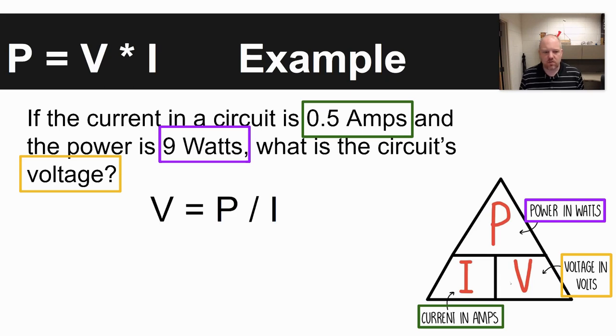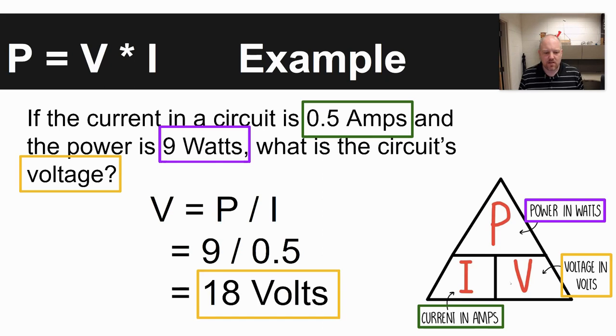The equation we want to use if we're solving for voltage is P divided by I. If you're covering up the V in voltage, you have the symbol P over I, power over current. Filling in the values that were given, you take 9 divided by 0.5. What you come up with for an answer is 18 volts. Our voltage for this example would be 18 volts.